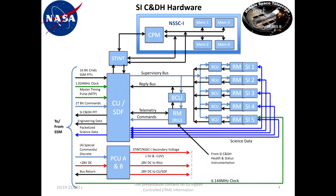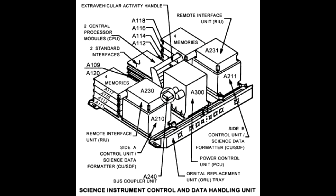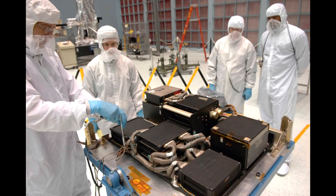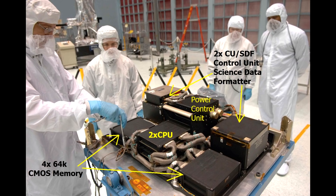So that's the easy fixes exhausted. They are still looking at other possibilities — memory can be written to directly by other units. The computer sits on an entire board called the Science Instrument Control and Data Handling Unit, and on there are control units and science data formatters which talk directly to the instruments and can write data into the memory. That might be causing a problem. There's also a conjecture that there may be a problem with the power supply, which may be generating the incorrect voltage and therefore the writes aren't going through correctly.